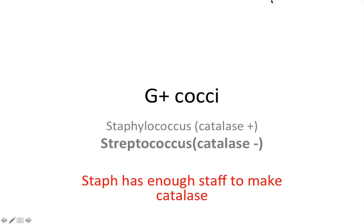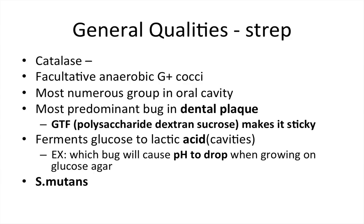Today's video is on gram positive cocci, focusing on streptococcus. The two types of gram positive cocci in this series are staphylococcus and streptococcus. A big distinguisher between them is whether they produce the enzyme catalase. Staphylococcus produces catalase and streptococcus does not. The mnemonic: staph has enough staph to make catalase, so staph is catalase positive.